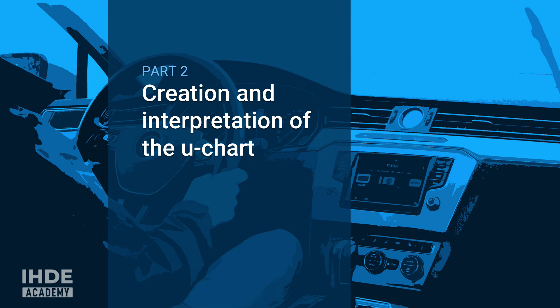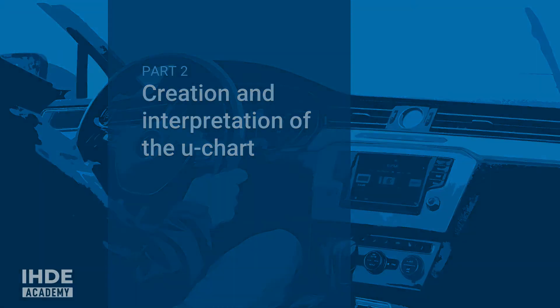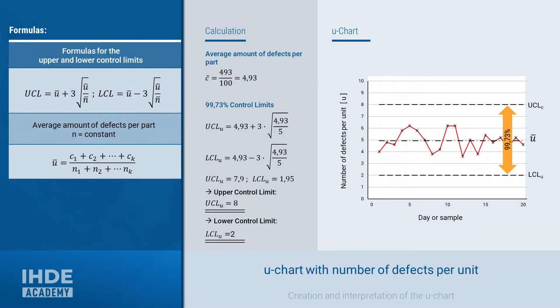Now we come to the creation and interpretation of the u chart. In the control chart on the right side, the number of defects in a sample is plotted on the y-axis. The x-axis scale is for the sample number. In our example, these are days because a sample was taken every day.